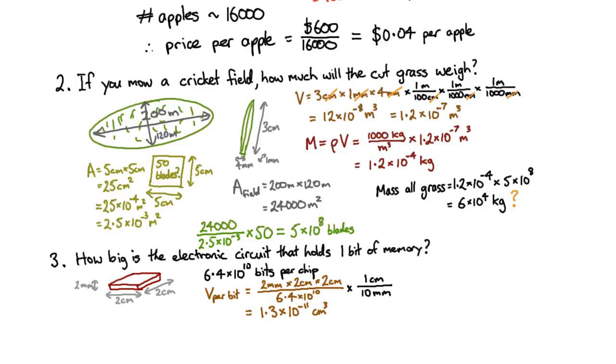Now remember that the volume scales as the length cubed, and so if I'm looking for the sort of size of a cube that would have this volume, then I'd have to take the cubic root. So that number is about 2 by 10 to the minus 4. The cube root of a centimetre cubed is just a centimetre, so the unit is a centimetre, which is 2 microns, which is roughly the size of a single bit.